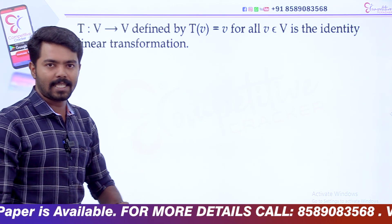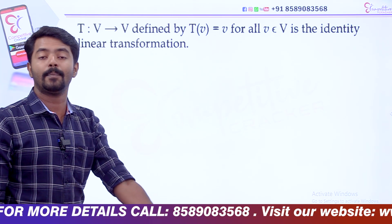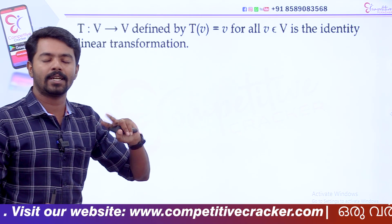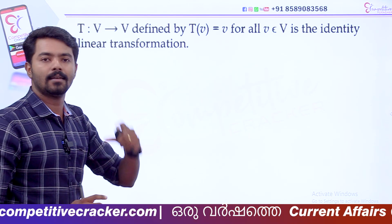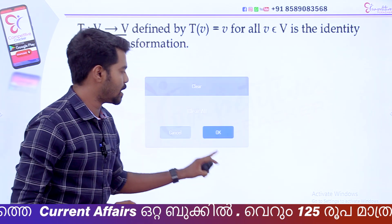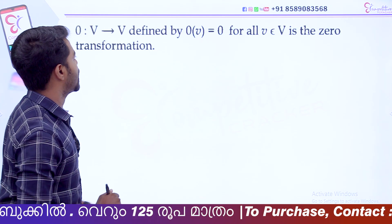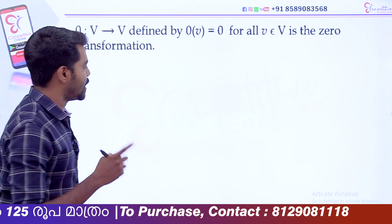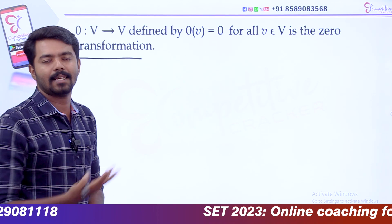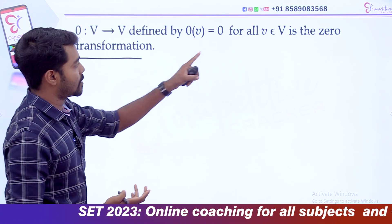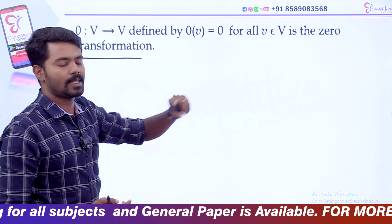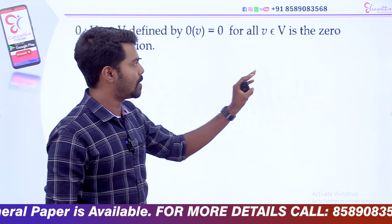T of V equals V — that's the first set, all elements, to the second set. This mapping of the same set is called the identity linear transformation. Now let's say, 0 from V to V is defined by 0 of V equals 0 for all V elements of V — this is the zero transformation. Zero transformation and trivial transformation are the same thing.